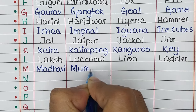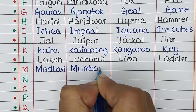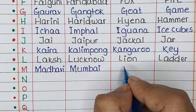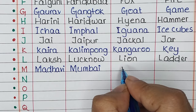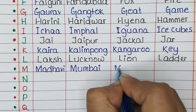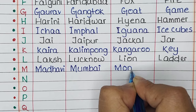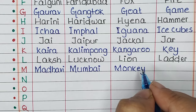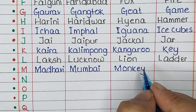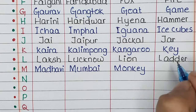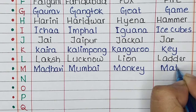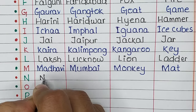Next is letter M. The name is Madhavi, the place is Mumbai, the animal is Monkey, and the thing is Mat.